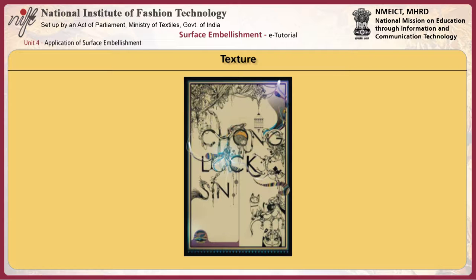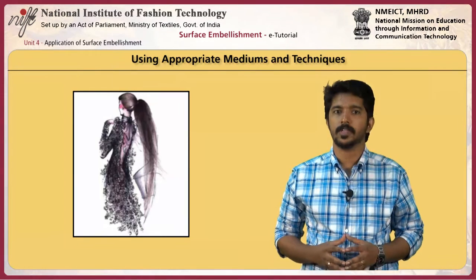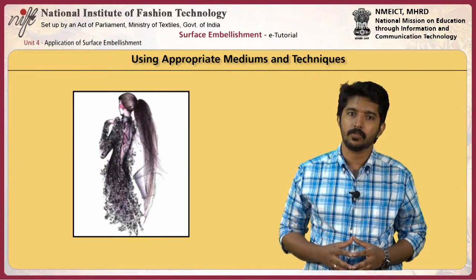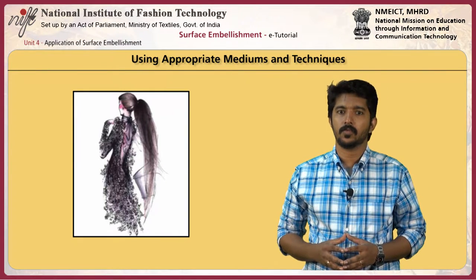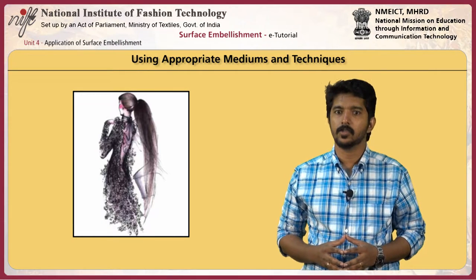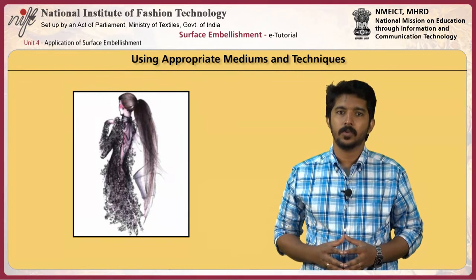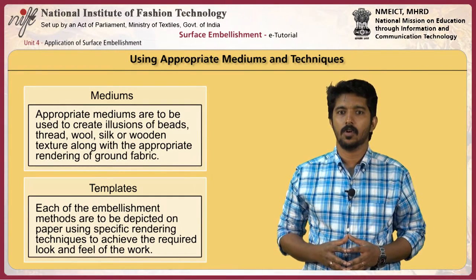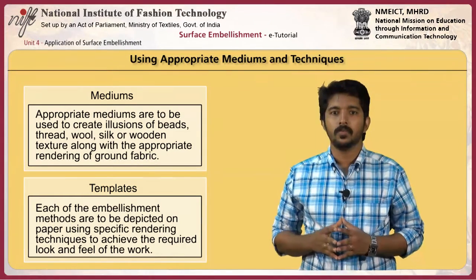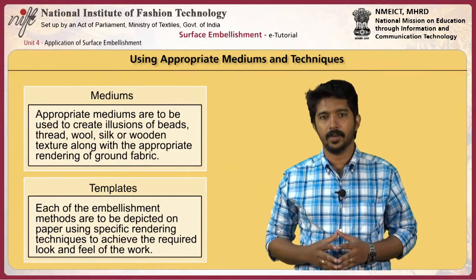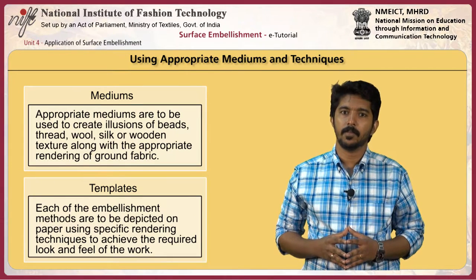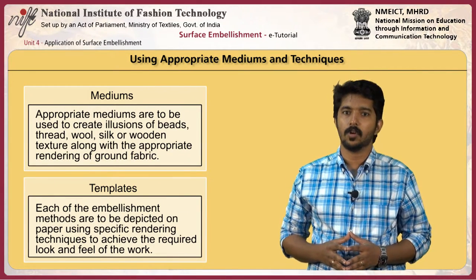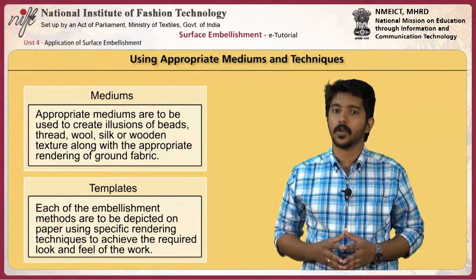Now let's learn how to simulate the patterns and textures of the source of inspiration on paper using appropriate mediums and techniques. Artists often use the inherent qualities of a medium combined with various forms of mark-making, such as rough shading, smooth blending, hatching, or scumbling, to create interest within the image. Appropriate mediums are to be used to create illusions of beads, threads, wool, silk, or wooden textures, along with appropriate rendering of the ground fabric.